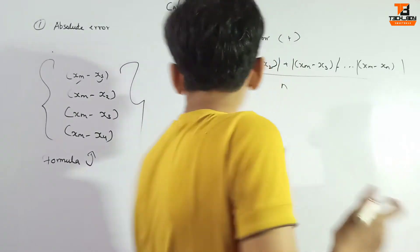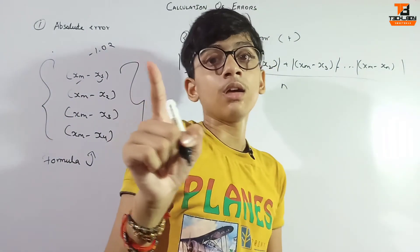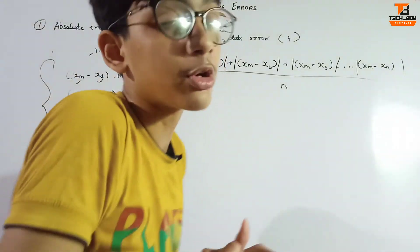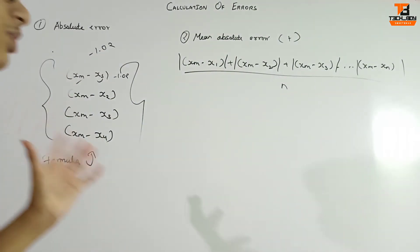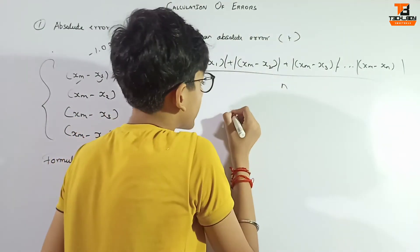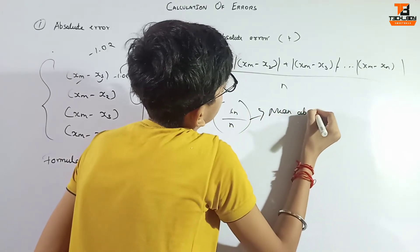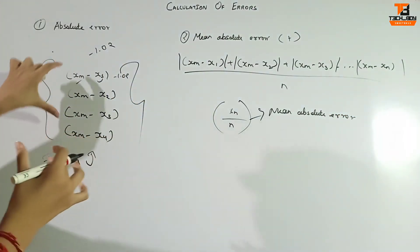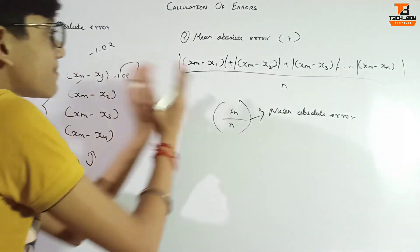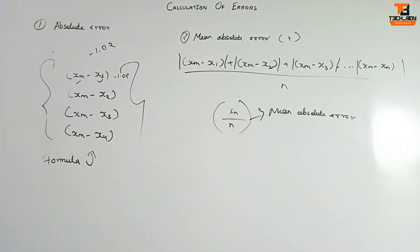This compulsory is positive because it's all in the mod. The mean absolute error is coming, that's it. It's a simple thing, you only get mean absolute error.